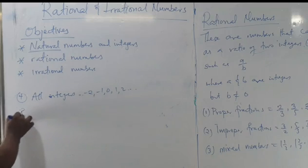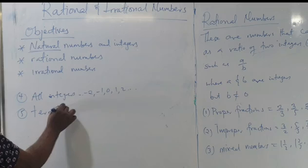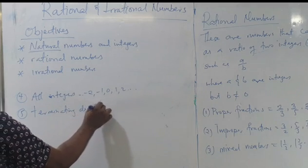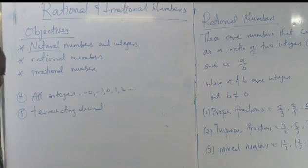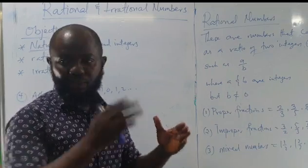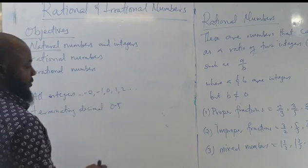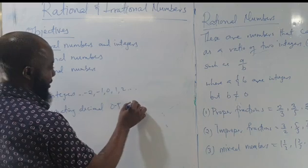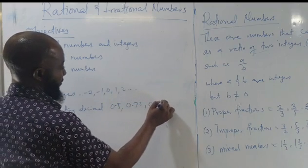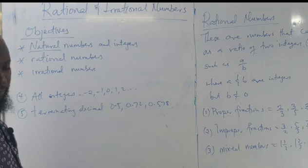The fifth example is terminating decimals. Terminating decimals are decimals that end at a particular value, such as 0.5, 0.72, 0.578. That is all — they terminate.